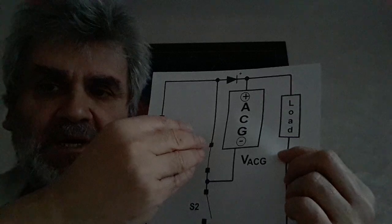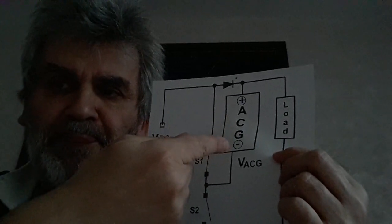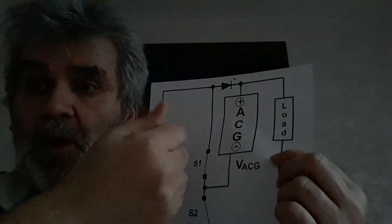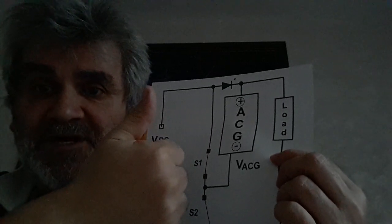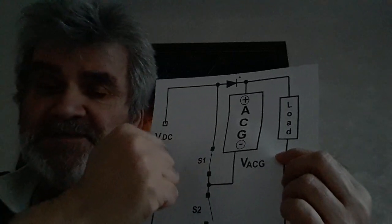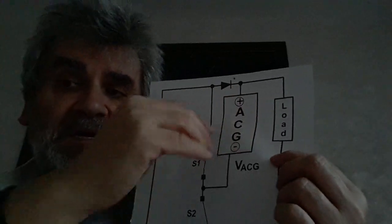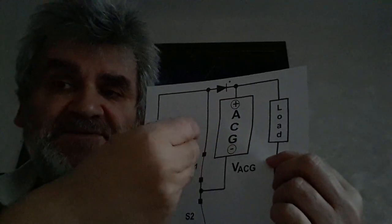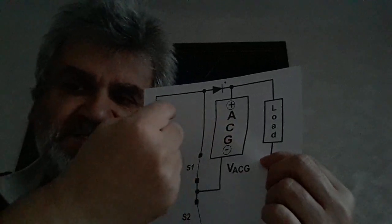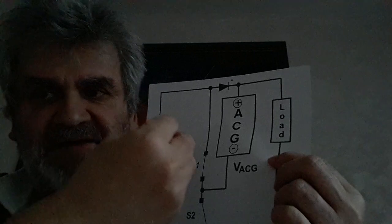If this divider divides by four, then the source gives one unit of charge to fill this ACG. When it's in series with the source to send to the load, it gives four. So the load receives four units of charge, but the source gave five.